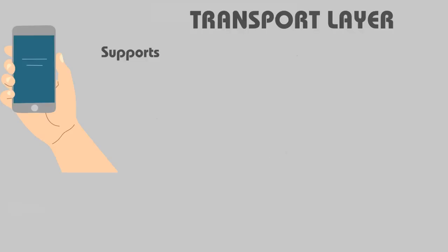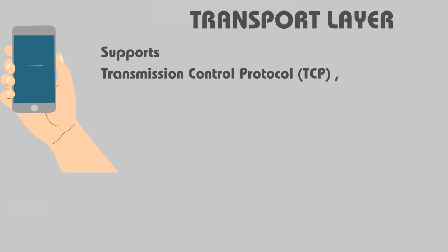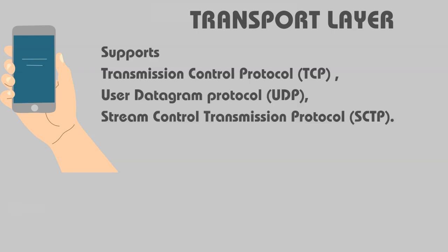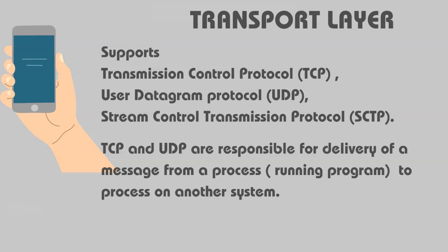The transport layer supports Transmission Control Protocol, User Datagram Protocol, and Stream Control Transmission Protocol. TCP and UDP are responsible for delivery of a message from a process — that is, a running program on one computer — to a running program on another computer, that is on another system.